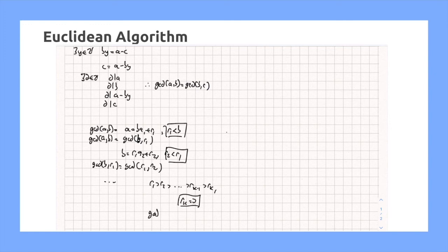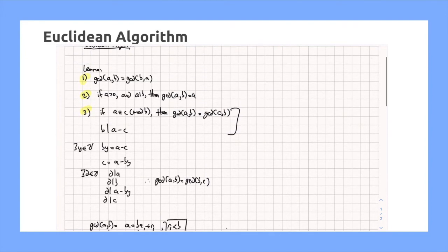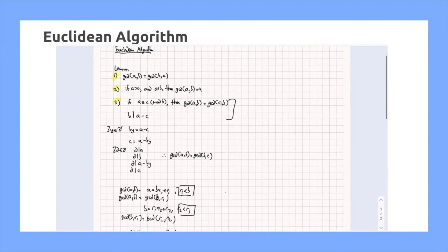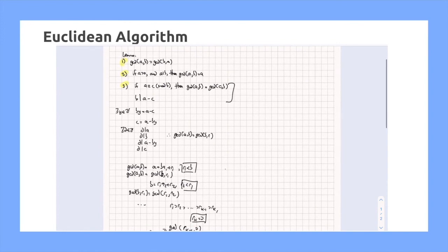So, then we get that GCD of all of these ones is going to be equal to RK minus 1 comma 0. And then we have, from this part over here, that the GCD of RK minus 1, 0.